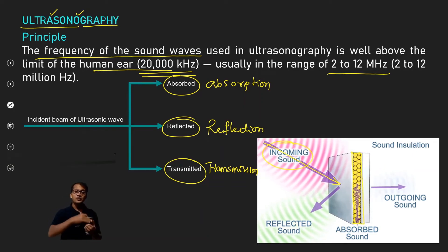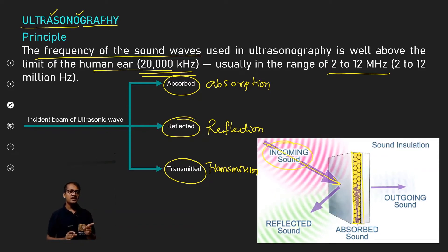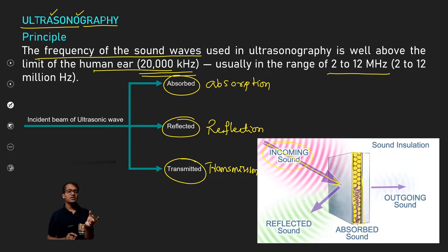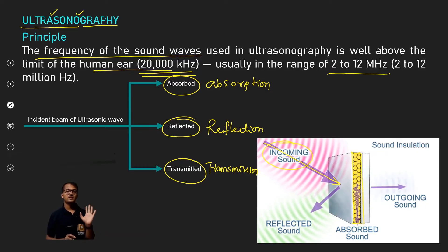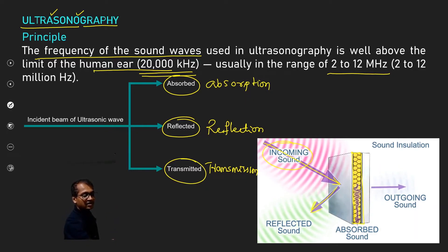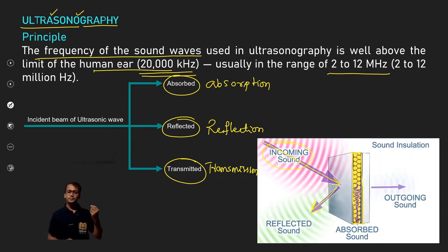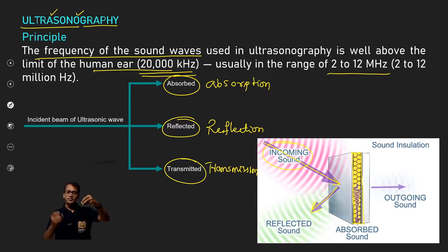So this is a tissue, and the sound wave passes through it. One part is not passing through — that part reflects. Some part will reflect back. What does the reflection tell us? It reveals the distance between the sound wave and the tissue, and also the size of the tissue.